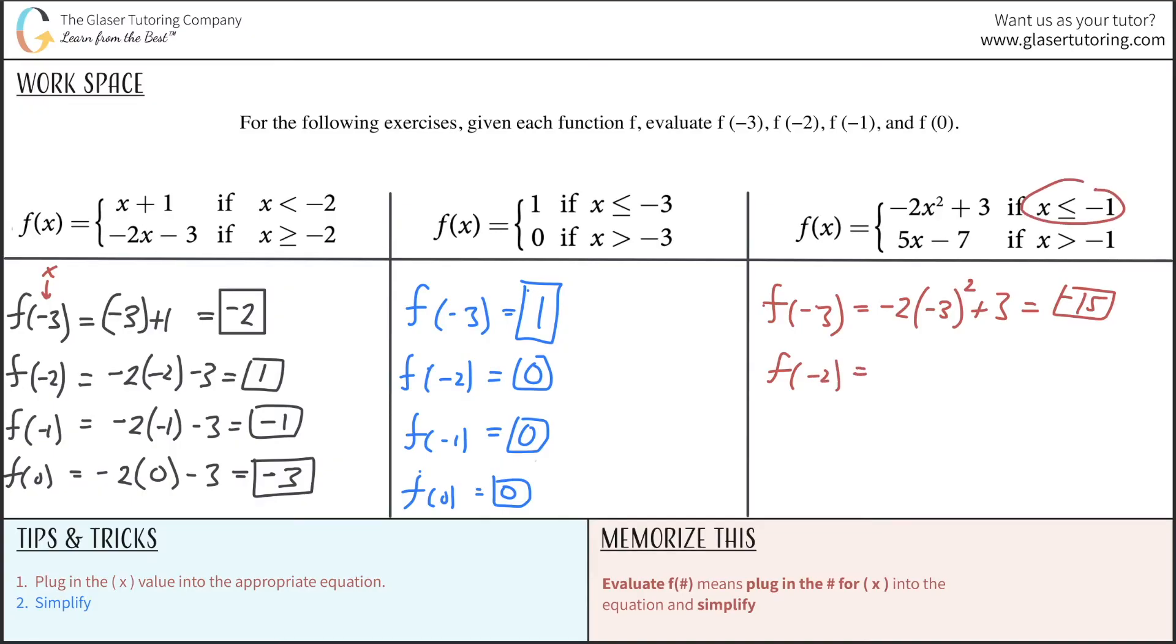So f of now negative 2. Again, it's still going to be less than negative 1. So we're still using the top function. So it's negative 2 times negative 2 squared plus 3. Do not forget your parentheses here. So this becomes a positive 4 and a positive 4 multiplied by a negative 2 will be negative 8. And then we're going to add 3 to that. So that's going to now be a negative 5.